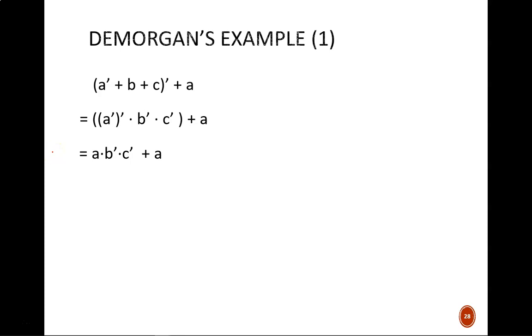Now we continue simplifying with any available rules. A prime prime equals A through rule 9. And then rule 10 allows us to drop off this term, leaving us with a final result of just A.